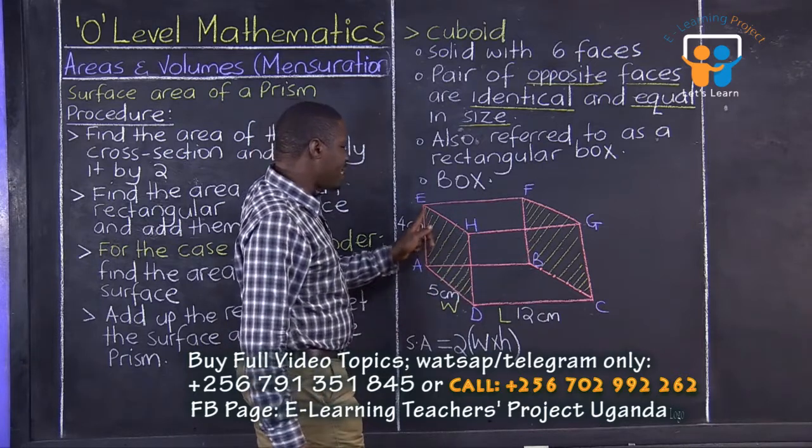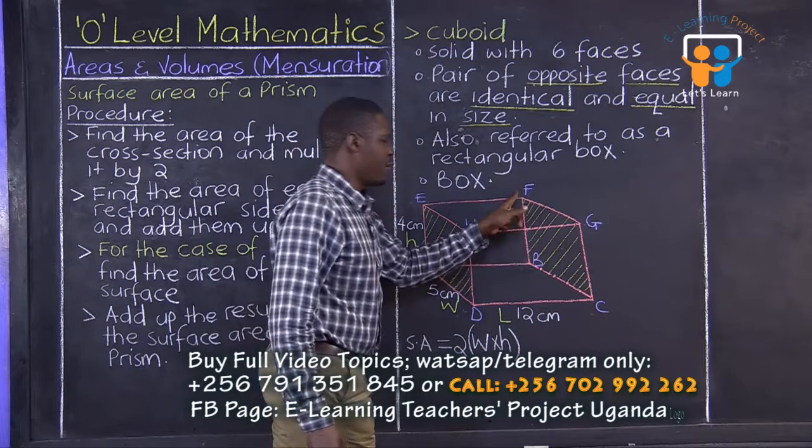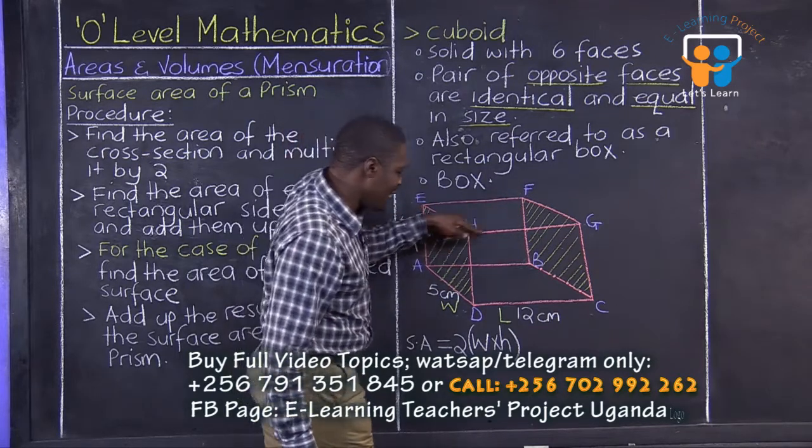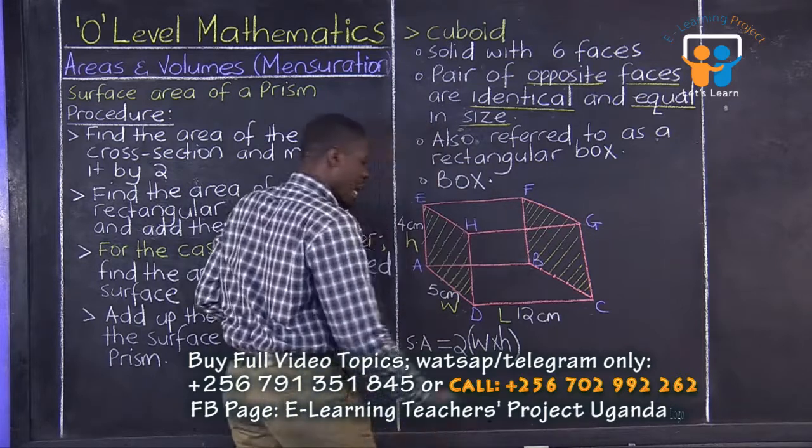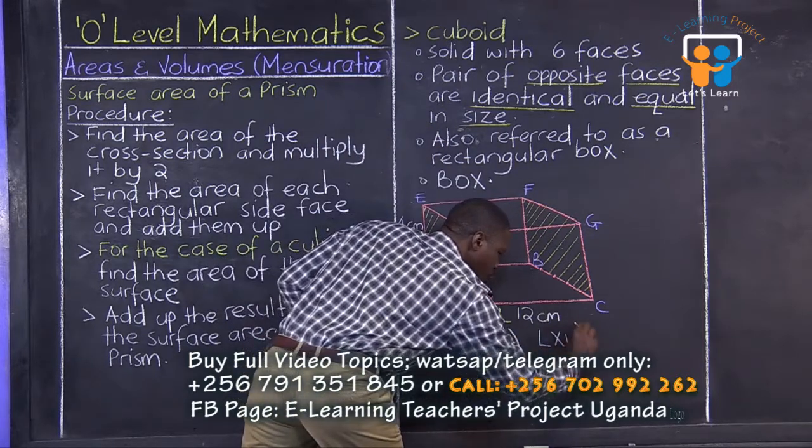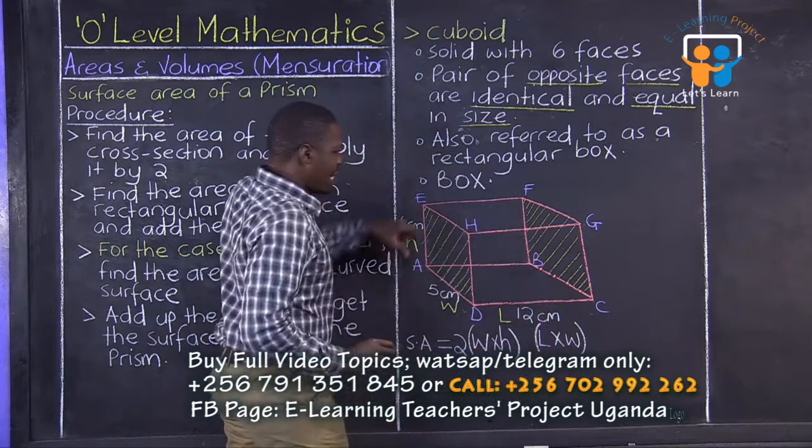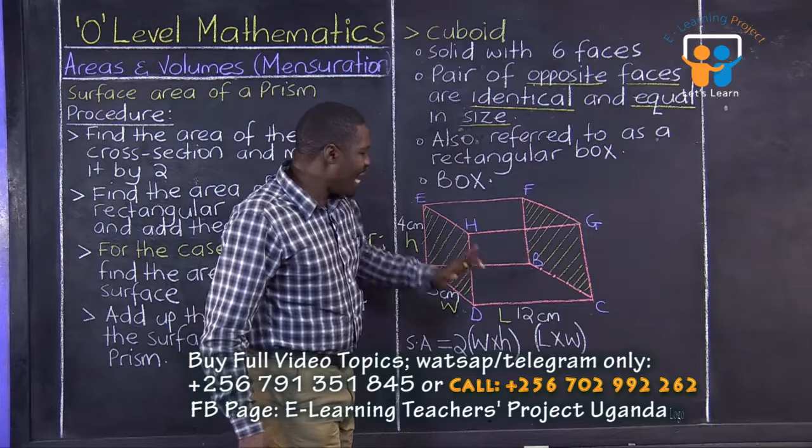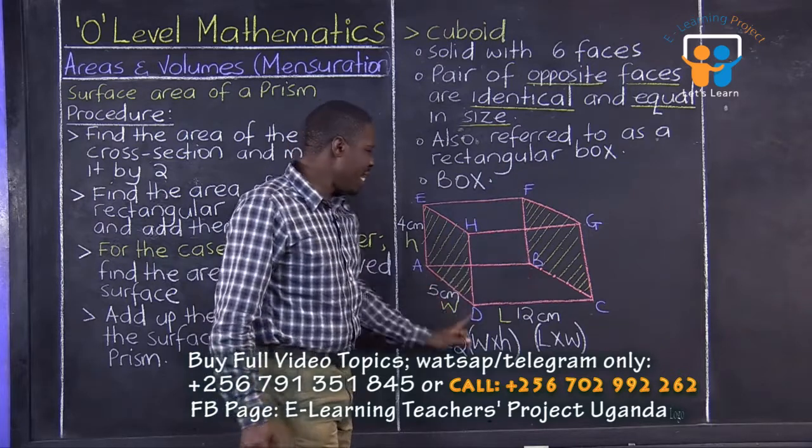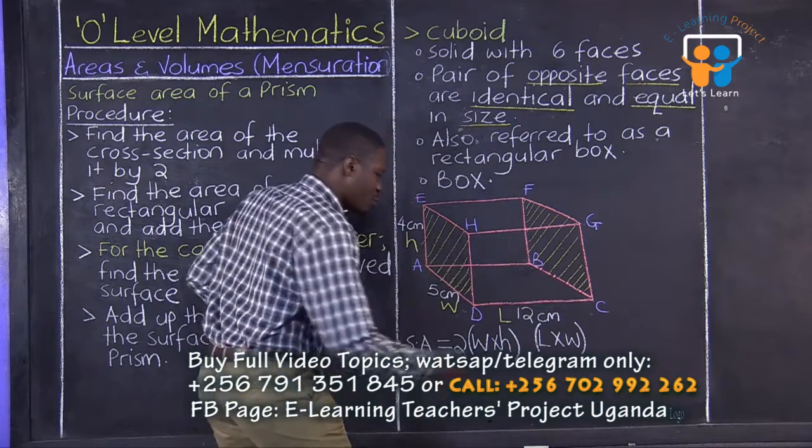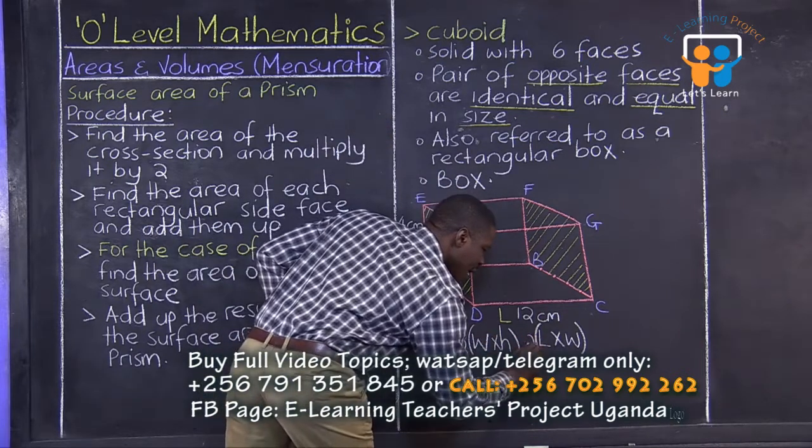Aha. The top part, EHGF. This is width, and then this is length. So, we shall have length times width. That is for the top part. But the top part and the bottom part, ADCB, they are also identical. That's why we multiply it by 2.